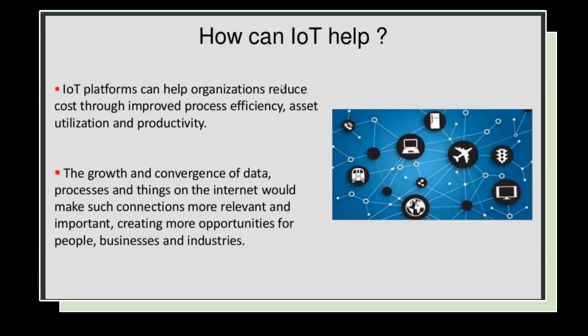How can IoT help? IoT platforms can help organizations reduce costs through improved process efficiency, asset utilization, and productivity. A growth and convergence of data, processes, and things on the internet would make such connections more relevant and important, creating more opportunities for people, businesses, and industries.